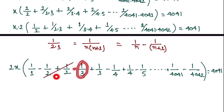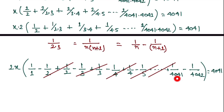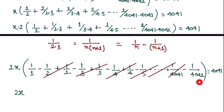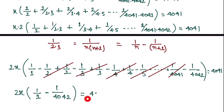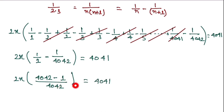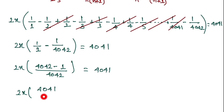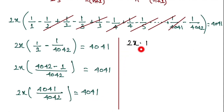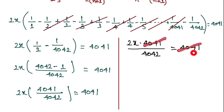This is a telescoping series — consecutive terms cancel: −1/2 and +1/2 cancel, −1/3 and +1/3 cancel, and so on, all the way through. What remains is 1/1 − 1/4042. So the equation becomes: 2x · (1 − 1/4042) = 4041. Taking the LCM: 2x · (4042−1)/4042 = 4041, giving 2x · 4041/4042 = 4041.